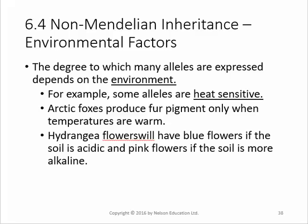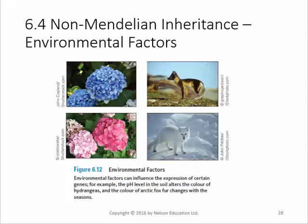There are environmental factors which change which alleles are expressed. A lot of animals, especially in the Arctic, have white fur in the cold and brown fur in the warm — they're heat sensitive. Hydrangea flowers will be blue in acidic soil and pink flowers in alkaline soil. So if you have a hydrangea in your front garden and you want it to be blue, you put acid in the soil — a soil additive that will acidify it and make the flowers come up blue. Ermine and various other animals have these pigment changes — same fox in summer and winter, same hydrangea in different soil pH.